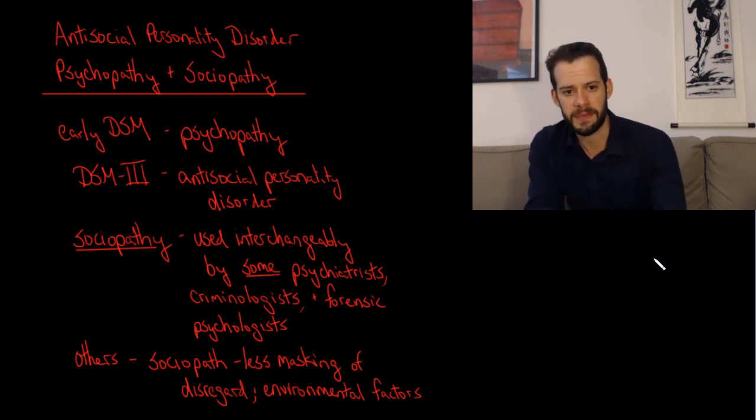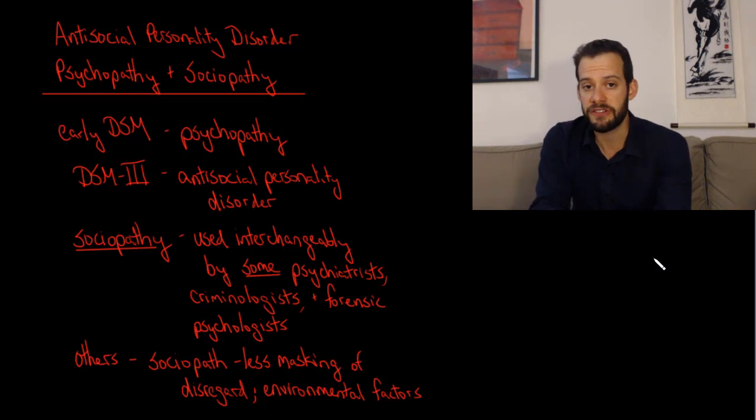And then we also have this term sociopathy, which further complicates things because not everyone uses this in the same way. And so some psychiatrists and criminologists and forensic psychologists will use the term sociopathy and psychopathy interchangeably. They don't see these as sufficiently different things that they need to distinguish and use one term or the other. But others disagree and they try to differentiate using these two terms, saying someone's a sociopath versus somebody's a psychopath.